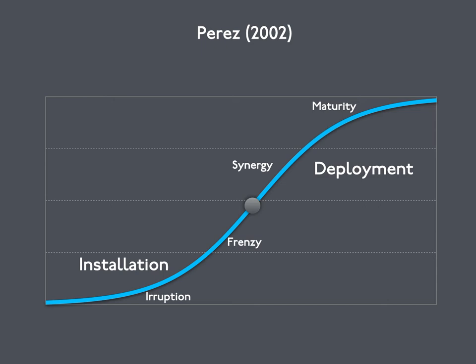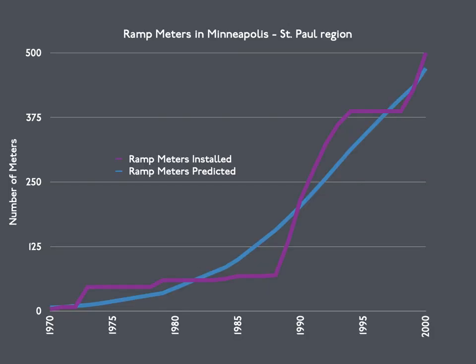Understanding this process and where any given technology is on this curve is important for making investment decisions. The best investments are made in the early years, as there are diminishing returns setting in by maturity. Adding capacity to a mature network is often foolish. Generally, forecasts in early years of an important and fast-growing technology underestimate demand, while in the later years of slower-growing, mature technology, the forecasts overestimate demand.